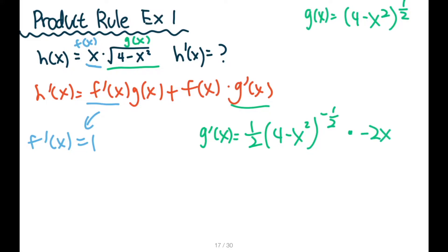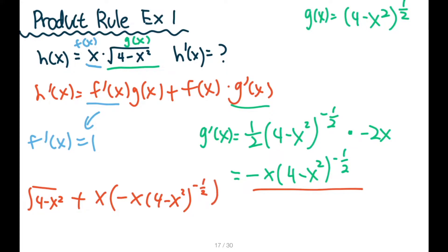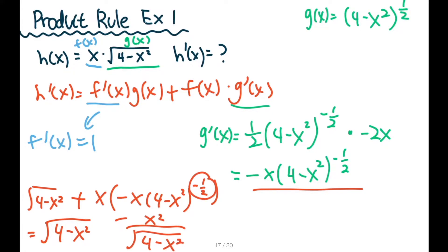So g prime of x is equal to 1 half times 4 minus x squared to the negative 1 half, because that's how you take the derivative and you multiply by chain rule, so negative 2x. In this case, it will simplify to negative x times 4 minus x squared to the negative 1 half. Now we can add them all together. So 1 times g of x, so 4 minus x squared, plus f of x — x — times g prime of x, so negative x times 4 minus x squared to the negative 1 half. Let's simplify: you get square root of 4 minus x squared minus x squared over square root of 4 minus x squared, because you are moving the negative exponent to the bottom.